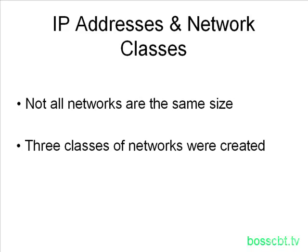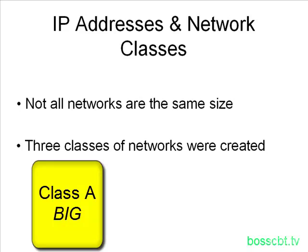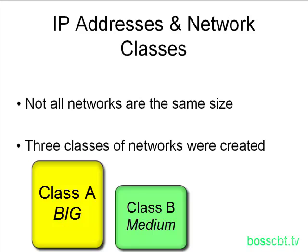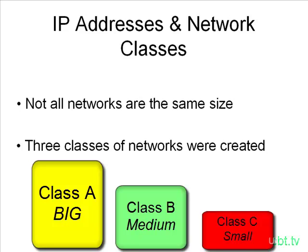We're going to start off with the Class A network. Class A networks are very large networks. Then we're going to talk about the Class B network — Class B networks are more of your medium-sized networks, not as big as your Class A. And then finally we're going to talk about Class C networks, which are for small-sized networks. We're going to go through each one of these and figure out what they mean and how they're useful to us in understanding IP as a whole.